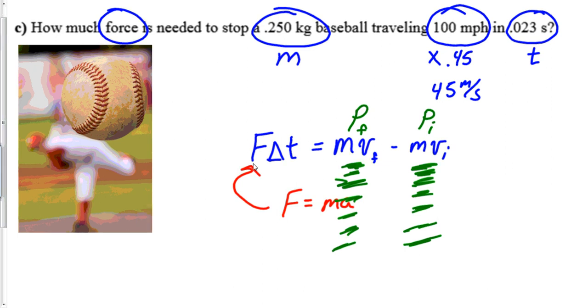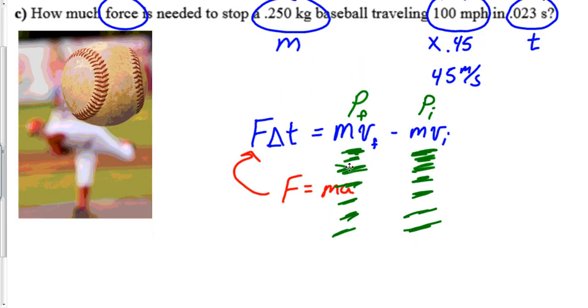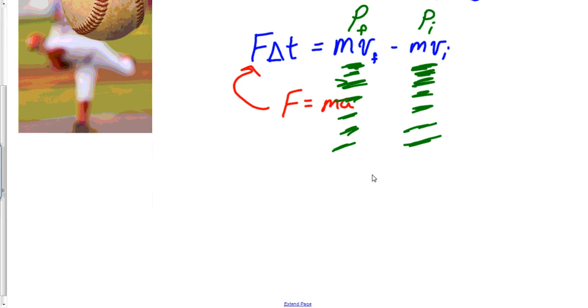This is a very handy equation to use, this FAT equation. I'm going to write it down again: F⋅Δt equals mv final minus mv initial. What does delta stand for? Change, very good.